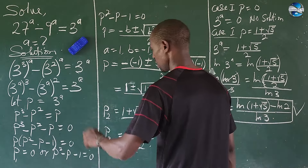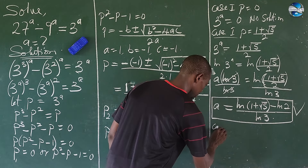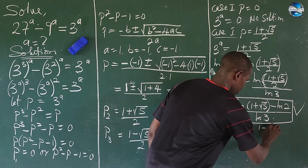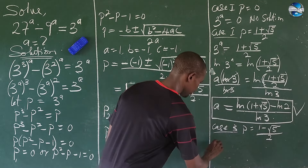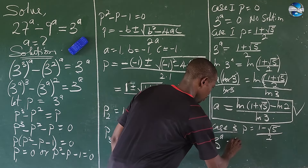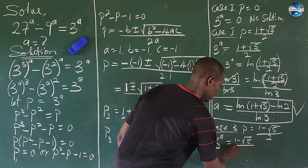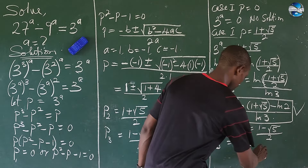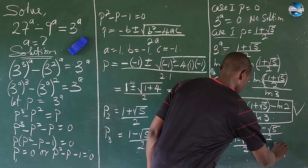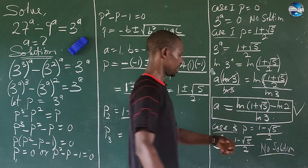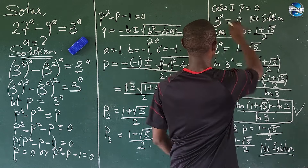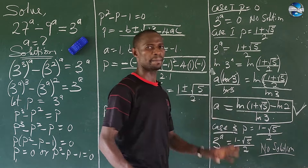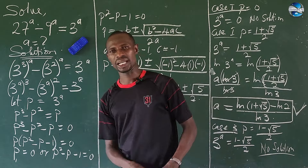For Case 3, p3 equals (1 − √5)/2. If we set 3^a equal to (1 − √5)/2, the left-hand side is positive but the right-hand side gives a negative value, so it will not work out — no solution. So Case 3 is rejected and Case 1 is also rejected. Only Case 2 is accepted as the answer that satisfies the original equation.